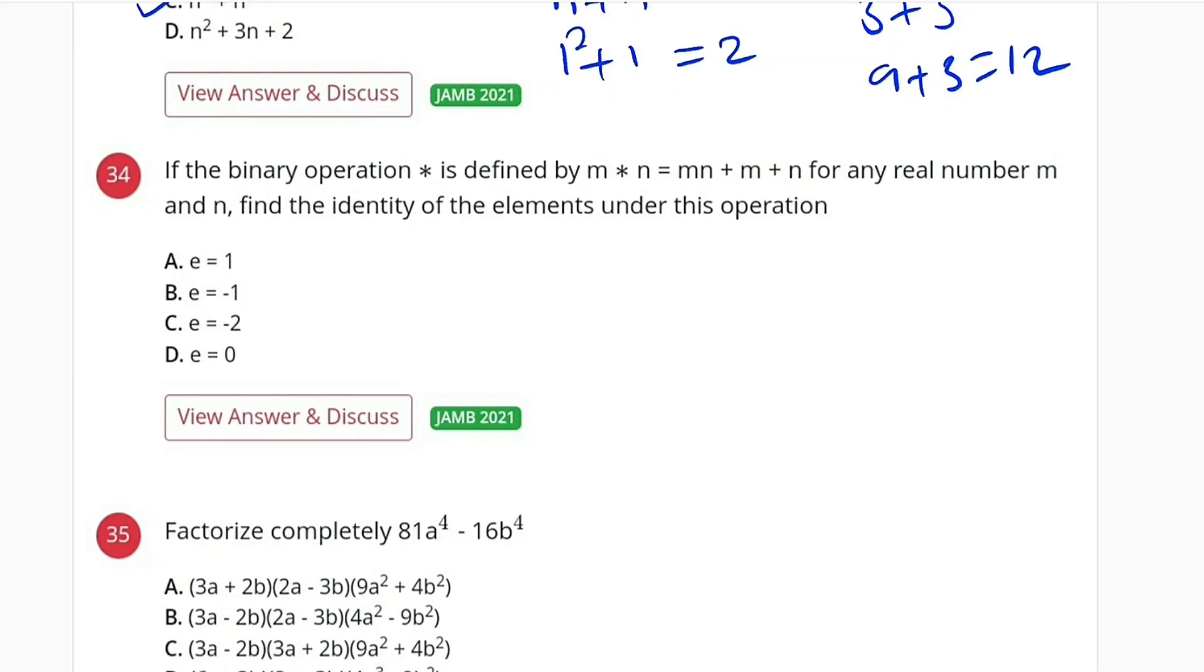Question number 34 is a binary operation question. It states that if the binary operation, which is an asterisk, is defined by M asterisk N, wherever you have M asterisk N, it means M multiplied by N plus M plus N for any real numbers M and N. We are asked to find the identity element under this operation.